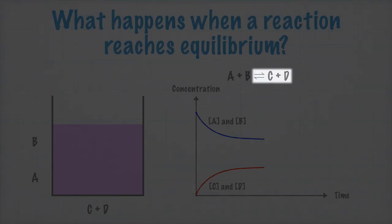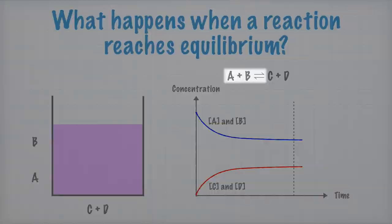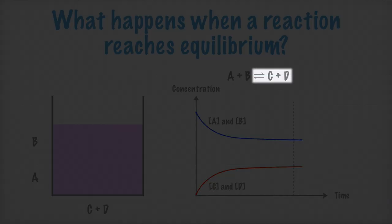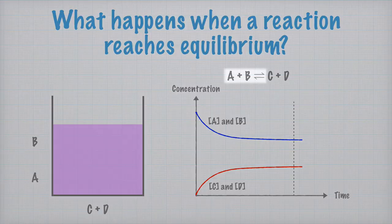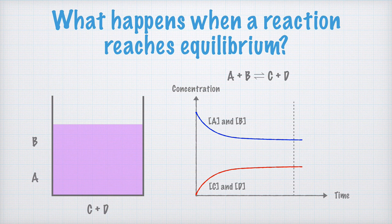We can see that as we follow the concentrations forward in time. At a given time, we reach a point where C plus D is formed at exactly the same rate as A plus B. The reaction rate to the right is exactly the same as the reaction rate to the left, and the concentrations don't change anymore. The reactions to the right and to the left balance each other perfectly, and the system is at equilibrium.